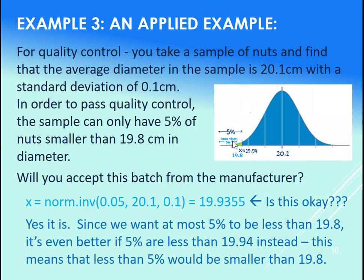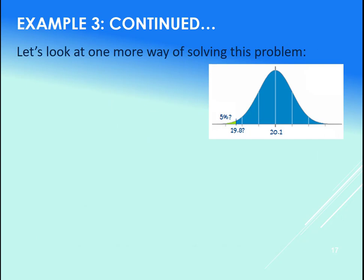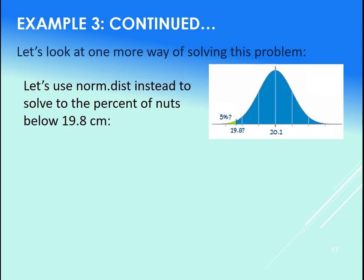Now let's look at this example, this quality control example in a different way as well. You can pick whichever way you prefer to solve this problem. Let's think of it in a different way here. Let's think of it with the norm.dist. Let's look for this area and let's set our x value to 19.8. So let's see what percentage of the nuts are less than 19.8 in diameter.